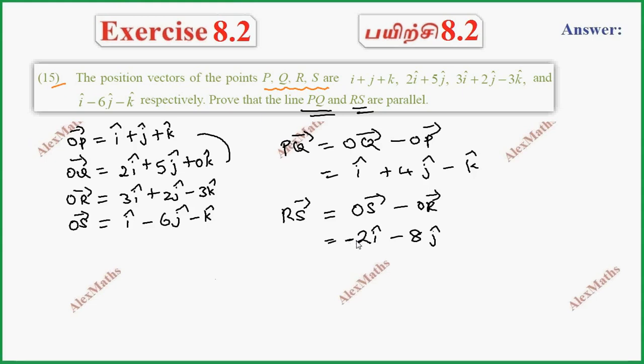2I minus 8J plus 2K. Now, if we factor out minus 2, we have minus 2 times (I plus 4J minus K), which is PQ. So we have RS vector equal to minus 2 PQ vector.